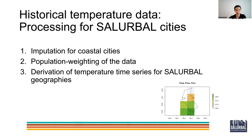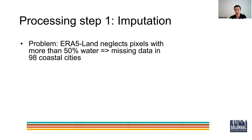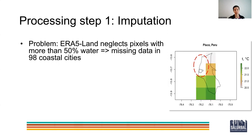The first step is imputation for coastal cities. The reason we had to deal with this is because the ERA-5 land is a land component of the reanalysis, and therefore it neglects pixels with more than 50 percent water, which resulted in missing data in 98 coastal cities. You can see the Peruvian city of Fisco as one example here.